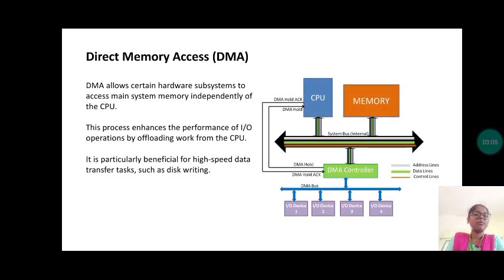Direct memory access. DMA allows certain hardware subsystems to access main system memory independently of the CPU. This process enhances the performance of input output operations by offloading work from the CPU. It is particularly beneficial for high-speed data transfer tasks such as disk writing.